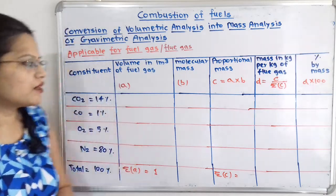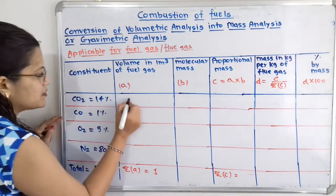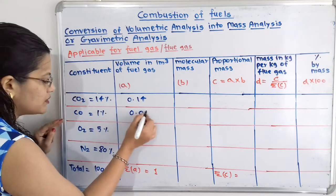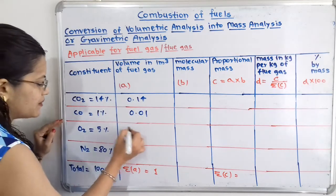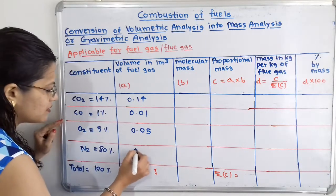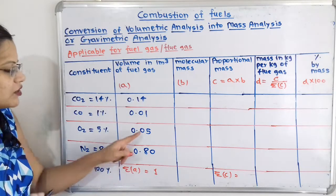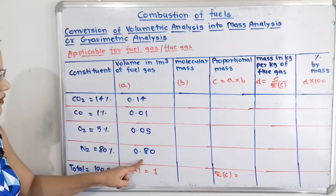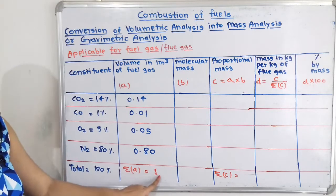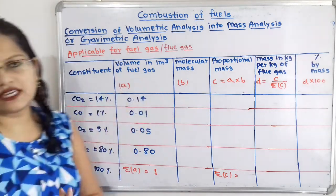We convert the given percentages into volume in 1 metre cube of flue gas by dividing by 100. So 14% becomes 0.14, 1% becomes 0.01, 5% becomes 0.05, and 80% becomes 0.80. If we add all these, summation of A equals 1, which is verified. Now we move to the next column.